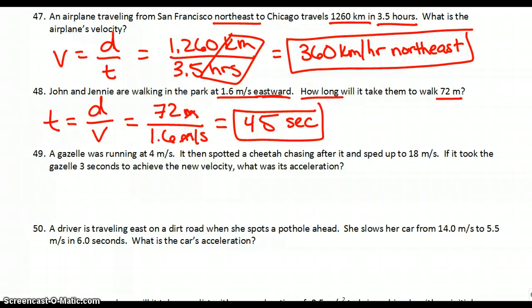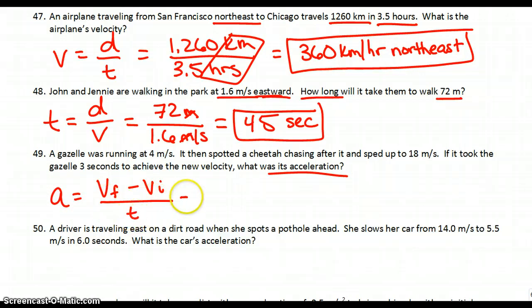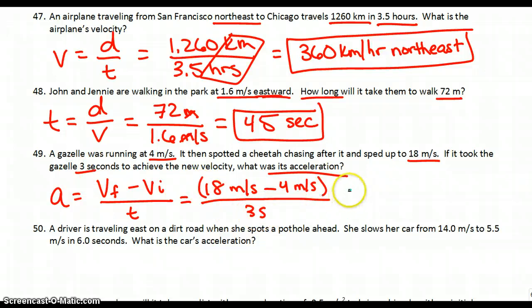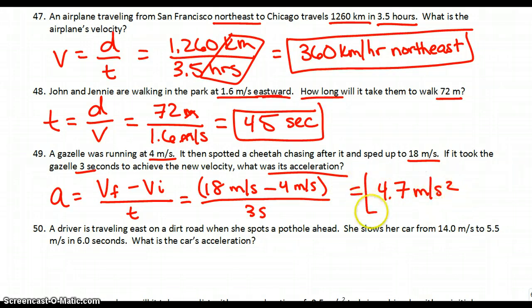49: a gazelle was running at 4 meters per second. It then spotted a cheetah chasing after it and sped up to 18 meters per second. If it took the gazelle 3 seconds to achieve this new velocity, what was its acceleration? Remember our acceleration formula: final velocity minus initial velocity divided by time. Final velocity is 18 meters per second, initial velocity is 4 meters per second, divided by 3 seconds. Do your subtraction first: 18 minus 4 gives us 14, divided by 3 gives 4.7 meters per second squared.